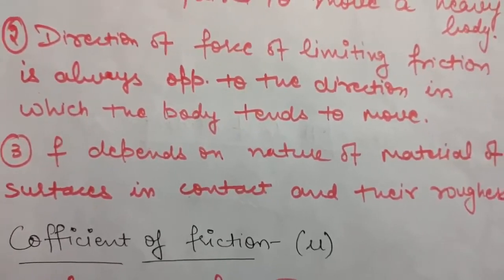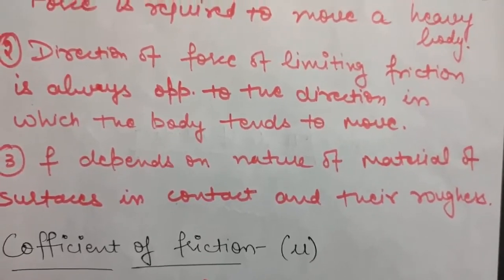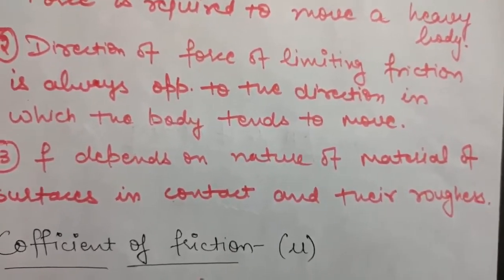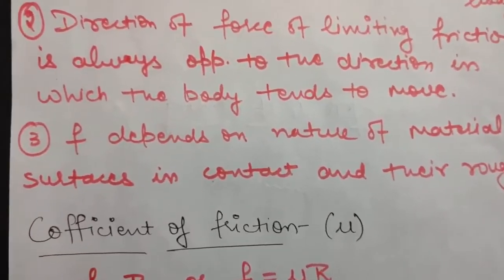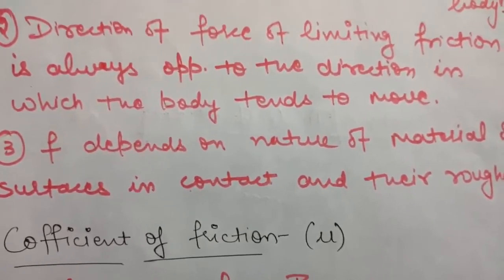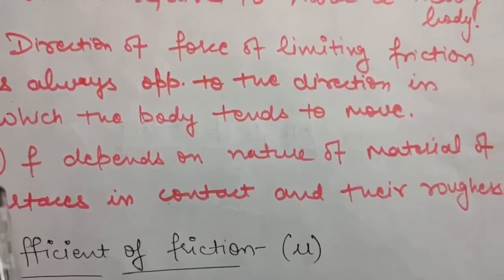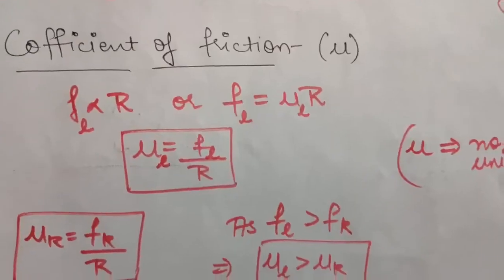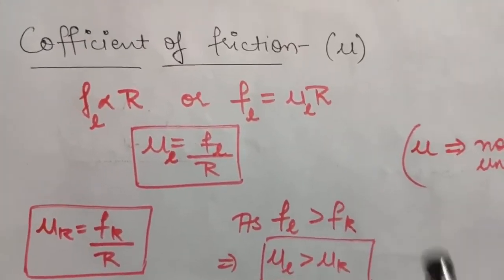You can relate this to everyday experience: it is easier to walk on a normal road than on a smooth tile because smooth tiles have less friction, so there is a greater chance of slipping.